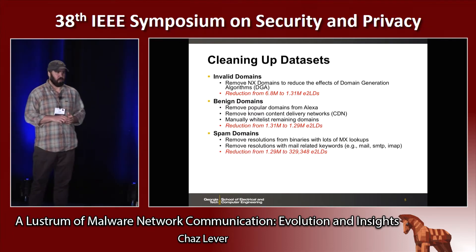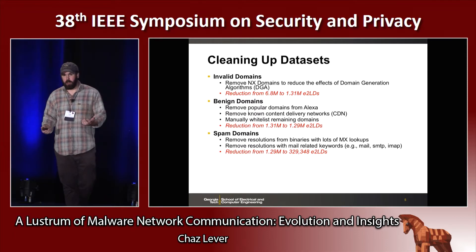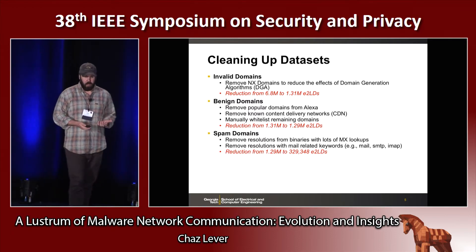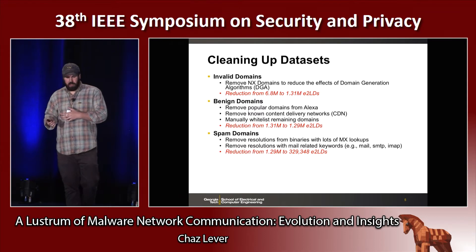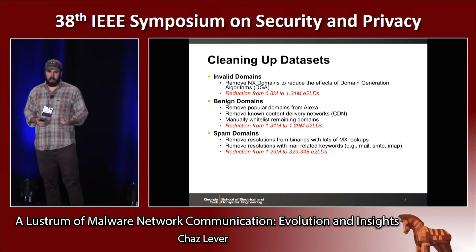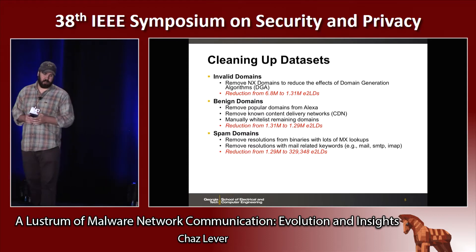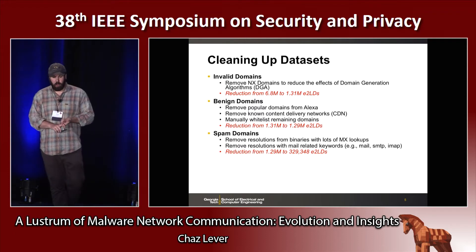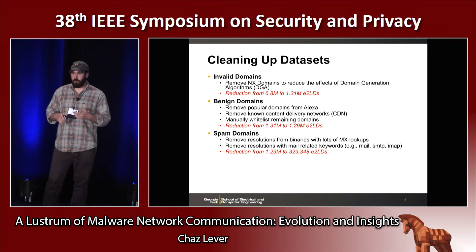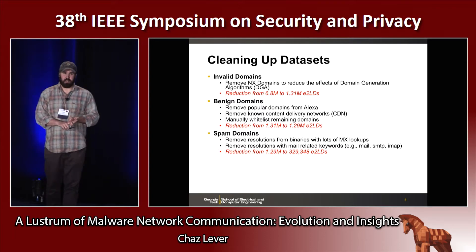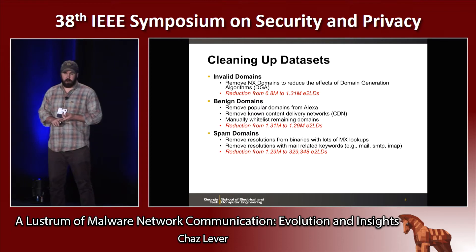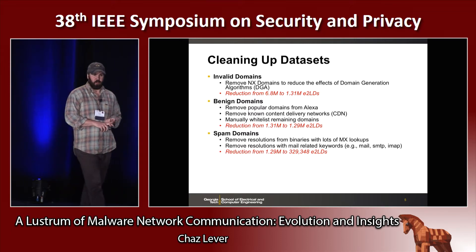Spam is another category of malware we sampled, and we wanted to filter out these types of samples. There's a lot of great work done on spam, and we didn't want our results to be tainted by spam-related behavior. So we removed resolutions from binaries with lots of MX lookups, and also removed resolutions from domains with mail-related keywords like mail.example.com or smtp.example.com. This gave us another nice reduction down to about 329,000 effective second-level domains.